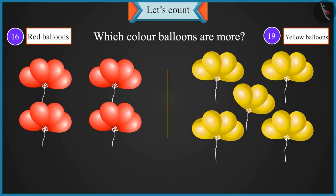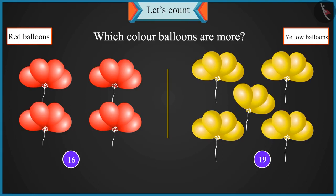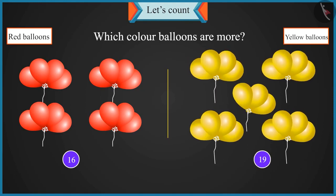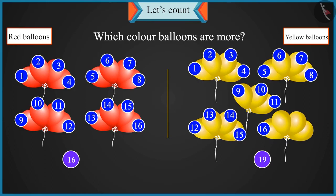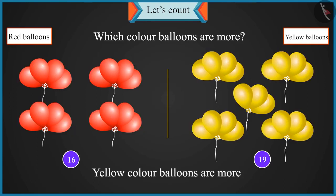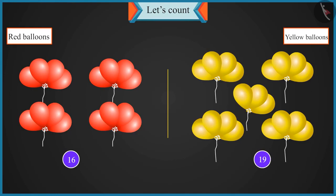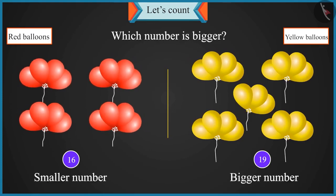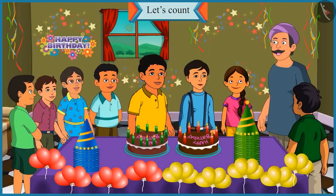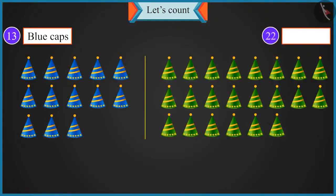Chotu, we have sixteen red balloons and nineteen yellow balloons. Tell me, which color balloons are more? There are sixteen red balloons and nineteen yellow balloons. Uncle, while counting, sixteen comes before and nineteen comes after. So the yellow balloons have three more: seventeen, eighteen, and nineteen. Yellow balloons are more. Of sixteen and nineteen, which number is bigger? Yellow balloons are more than red balloons, so nineteen is bigger than sixteen.